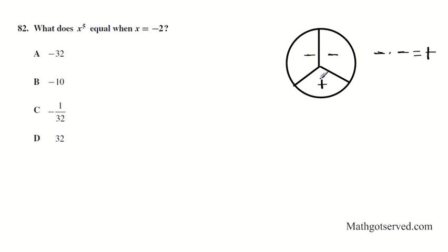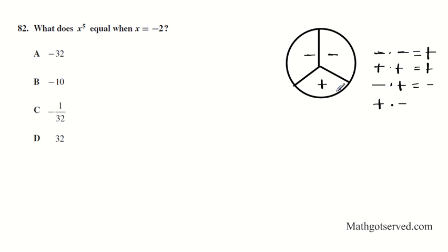Minus times minus equals a plus. And plus times plus — that's obvious — it's plus because the signs are the same. But if you have minus times a plus, the signs are different, so you have a minus. And plus times a minus — signs are different — that also gives minus. So any time the signs are different, you have a minus. Any time the signs are the same, you always have a plus.